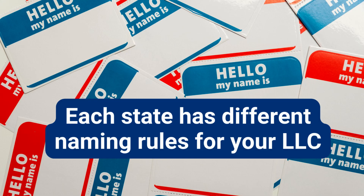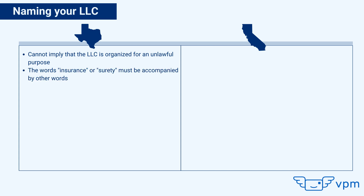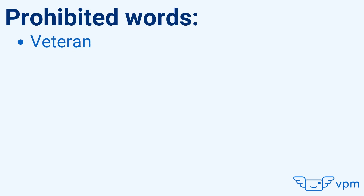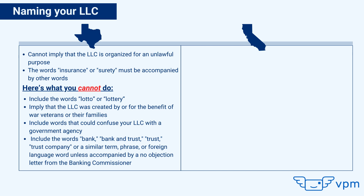Naming your LLC. You wouldn't think that naming rules for your LLC are different in each state, but they are. In Texas, your name cannot imply the LLC is organized for an unlawful purpose. Words like 'insurance' or 'surety' must be accompanied by clarifying words. You cannot include 'lotto' or 'lottery,' imply the LLC was created for war veterans, or include prohibited words: veteran, legion, foreign, Spanish, disabled, war, and world war. You cannot include words that confuse your LLC with a government agency like FBI or the Treasury. And you cannot include 'bank,' 'trust,' 'trust company,' or similar terms unless accompanied by a no-objection letter from the banking commissioner.